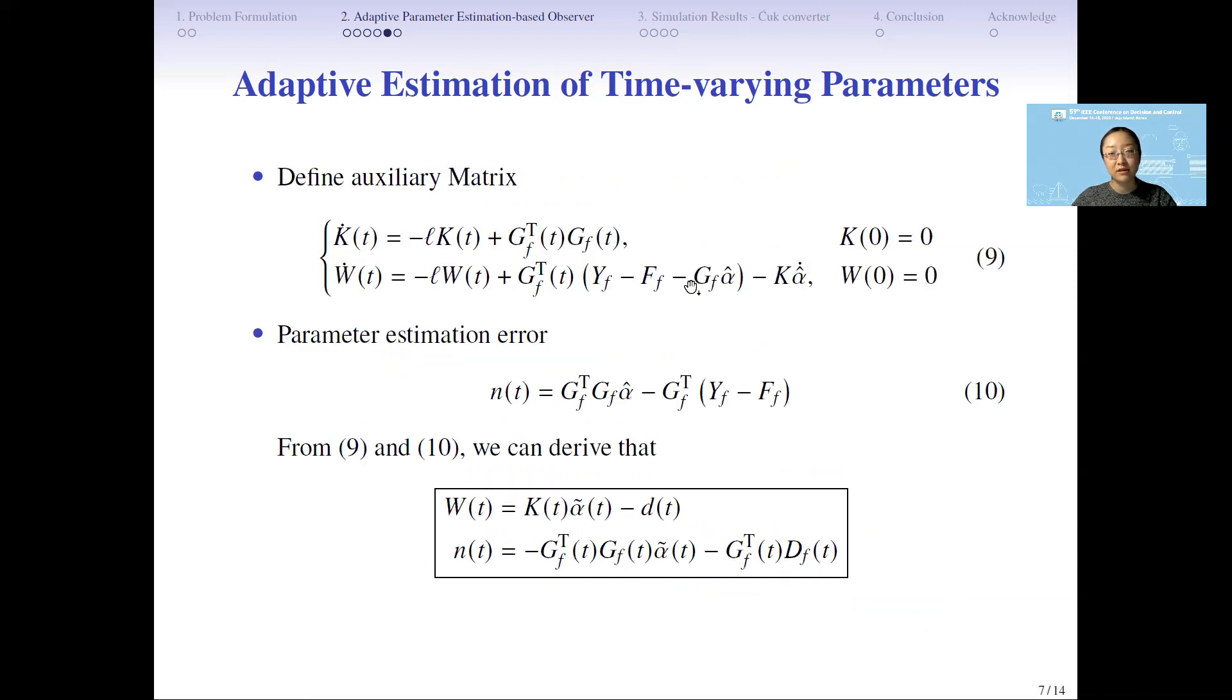Through some calculation, we define some metrics w and n. After some calculation, we could get the block equation. You could see w metrics and n metrics both contain the alpha theta. The difference between those metrics and vectors is w is a filtered version of n, which introduces the average effect and also can improve the robustness against the noise.